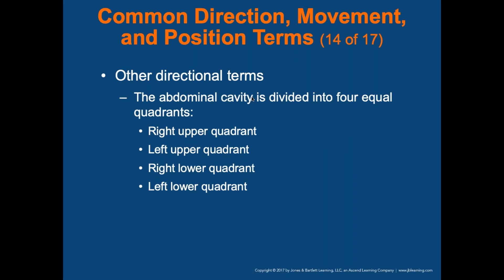The abdominal cavity is divided into four equal quadrants — right upper, right lower, left upper, and left lower — based on the umbilicus. Drawing a vertical and horizontal line through the navel creates four quadrants. You need to know where the large intestine, small intestine, kidneys, liver, stomach, appendix, and gallbladder are located, because when palpating and doing an assessment, you need to know where organs are and potentially where the problem is.